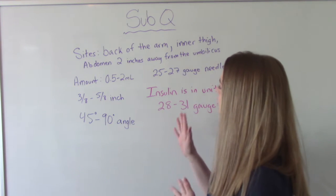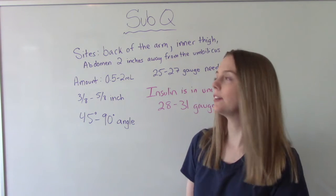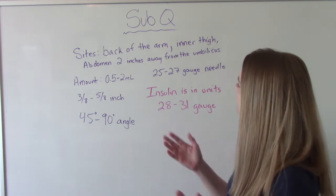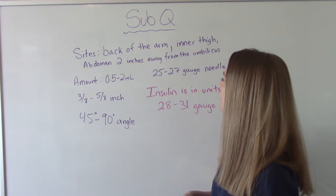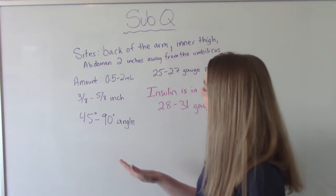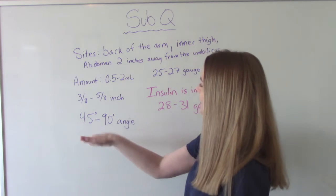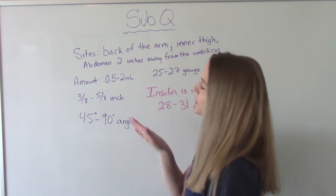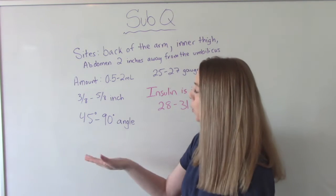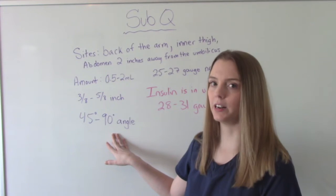The amount we give is roughly 0.5 to 2 mLs. The gauge of needle we'll use is anywhere between 25 to 27. The length — these are really little, teeny tiny ones — so it's 3/8 or 5/8 inches. And then we're going to hold it at a 45 to 90 degree angle when we put it in.